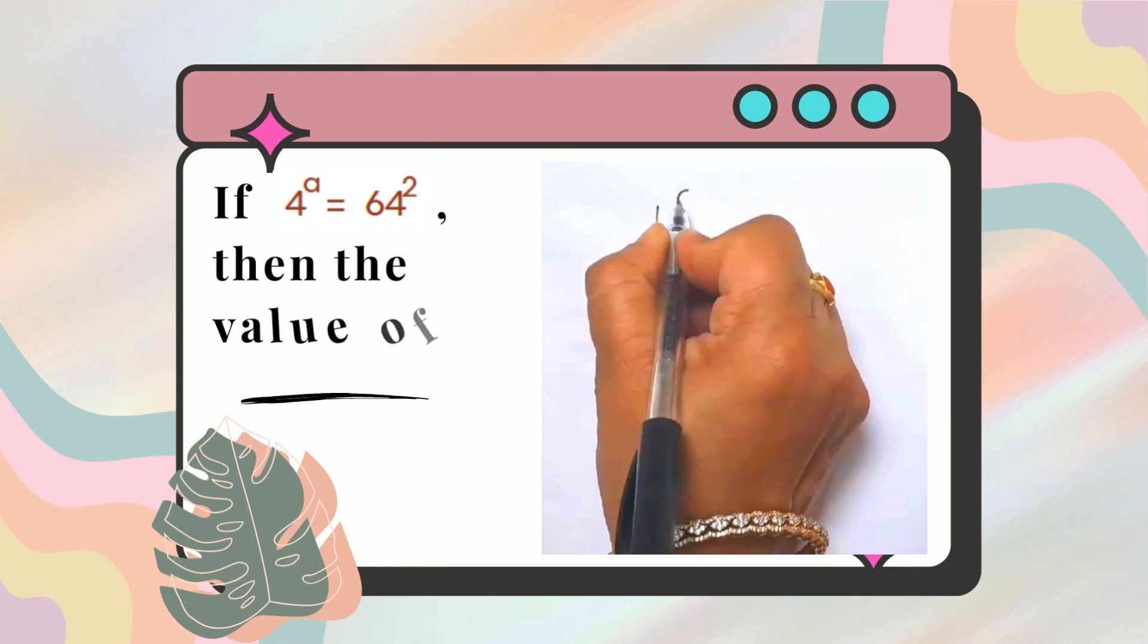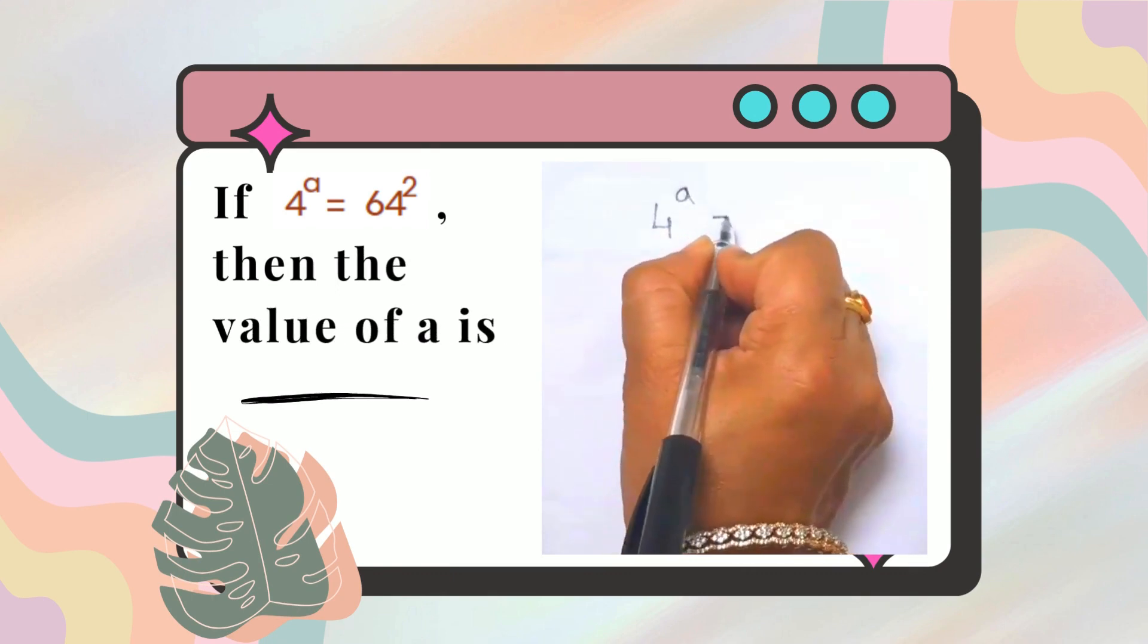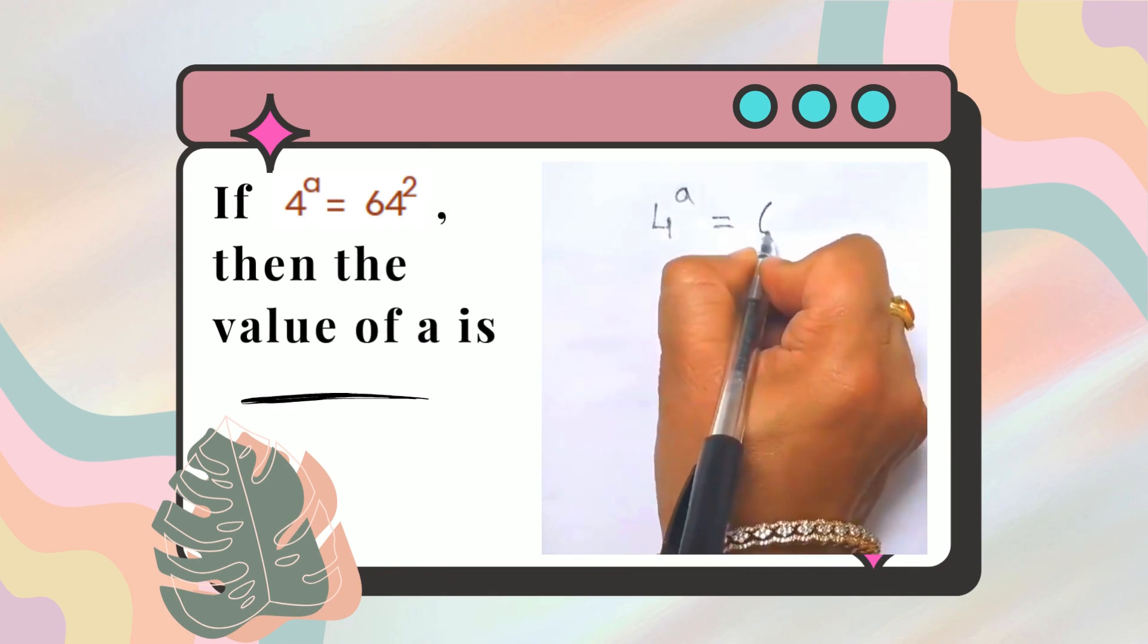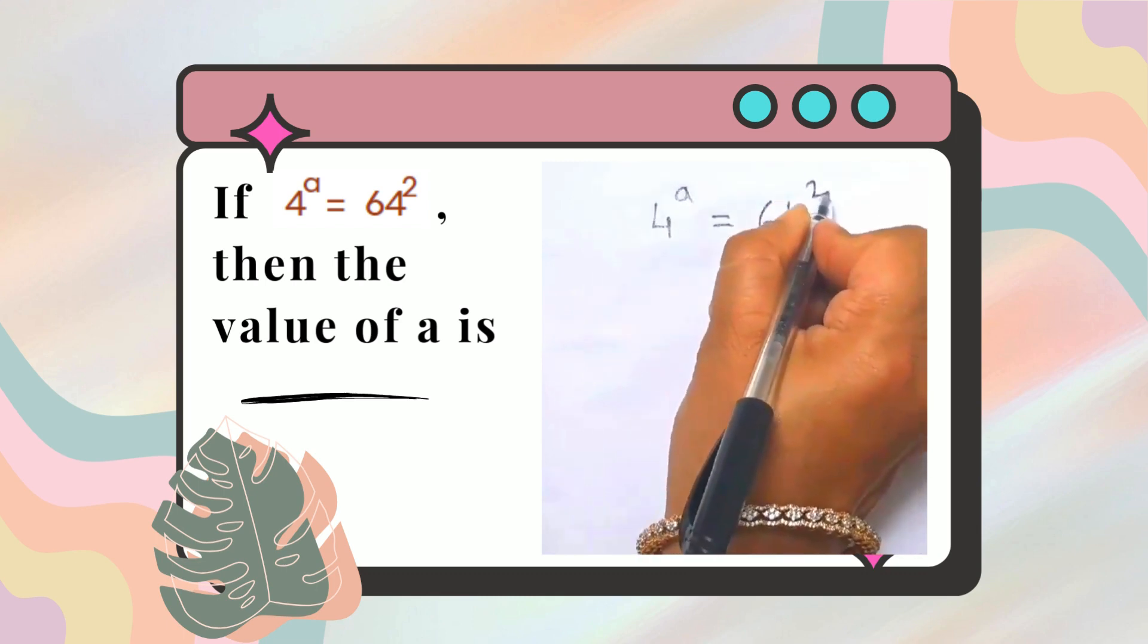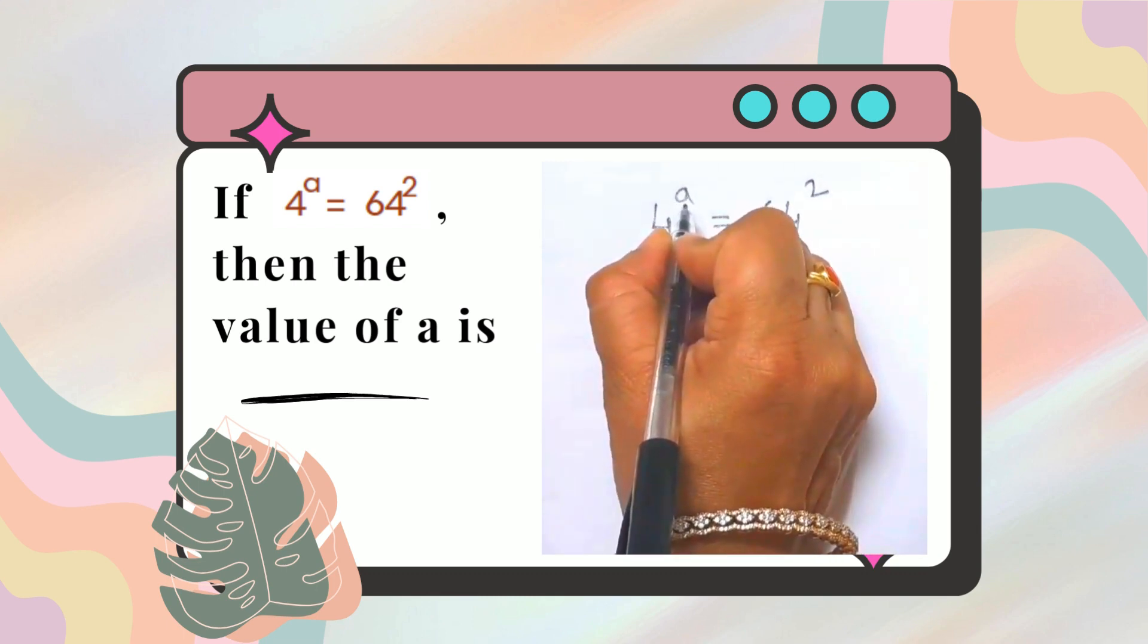If 4 raised to the power of A equals 64 raised to the power of 2, we have to find out the value of A.